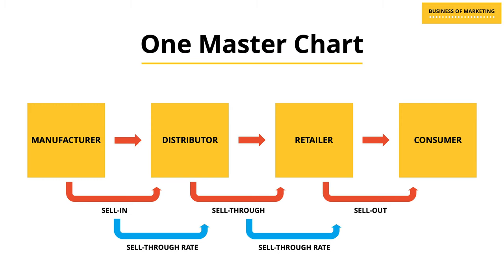To make all of these concepts crystal clear, I have put all of these measures into one single chart. On this chart you can see that the product moves from the manufacturer to the distributor — that measure is known as sell in. When it moves from the distributor to the retailer, the measure is known as sell through. And finally when it moves from the retailer to the consumer, the measure is known as sell out. You can also calculate the sell through rate based on the manufacturer and distributor's data, or on the distributor and retailer's data. If you remember this one chart, you will never be confused about any of these terms again.